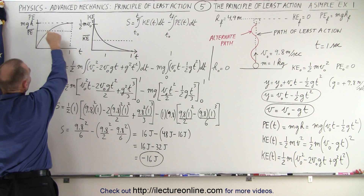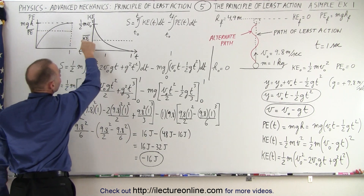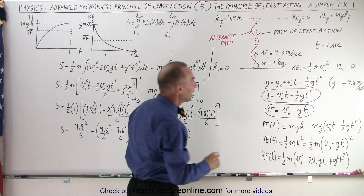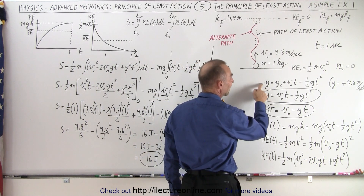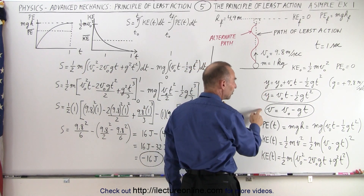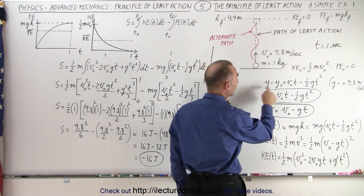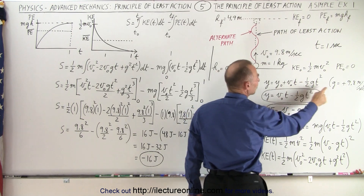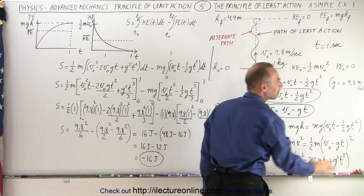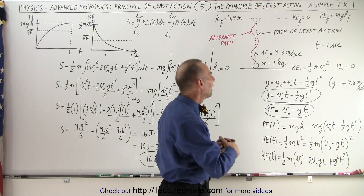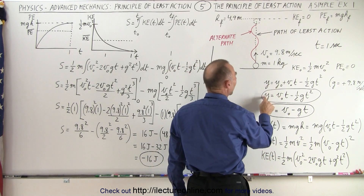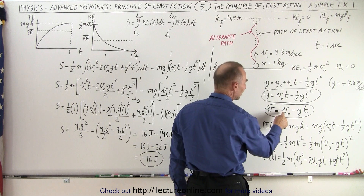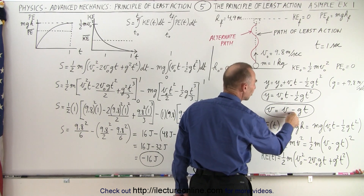Notice that the average potential energy in this case will be greater than the average kinetic energy over time. We need to use the equations of kinematics to find the height as a function of time and the velocity as a function of time. Using the equation y equals y-naught plus v-naught·t minus one-half g·t², with g as a positive 9.8, and since we don't have an initial height, the height as a function of time simplifies accordingly. The velocity as a function of time becomes v-initial minus g·t.